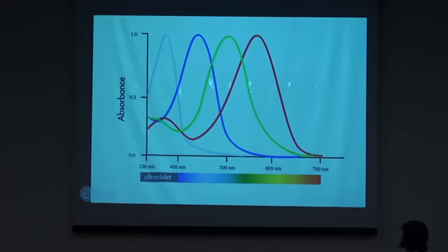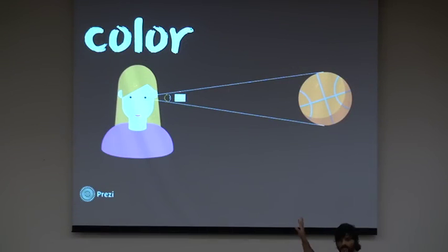Some cones are sensitive to short wavelengths corresponding to blue, others to medium wavelengths corresponding to green, while others are sensitive to red light or long wavelengths. This phenomenon is known as trichromatic stimulus. Being a subjective matter, we need to define a common language to share color information.